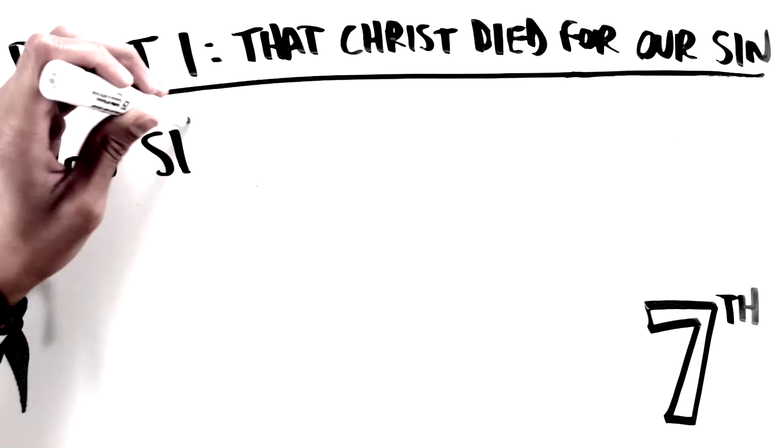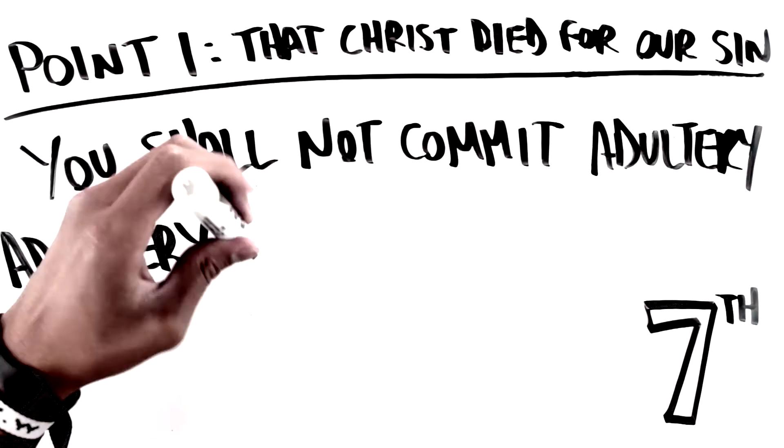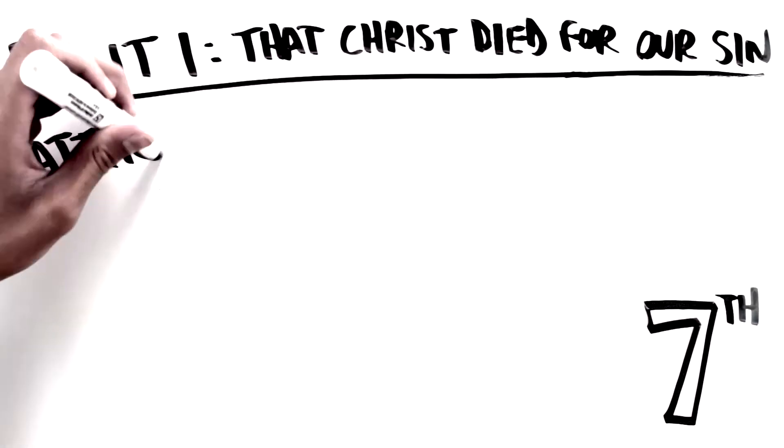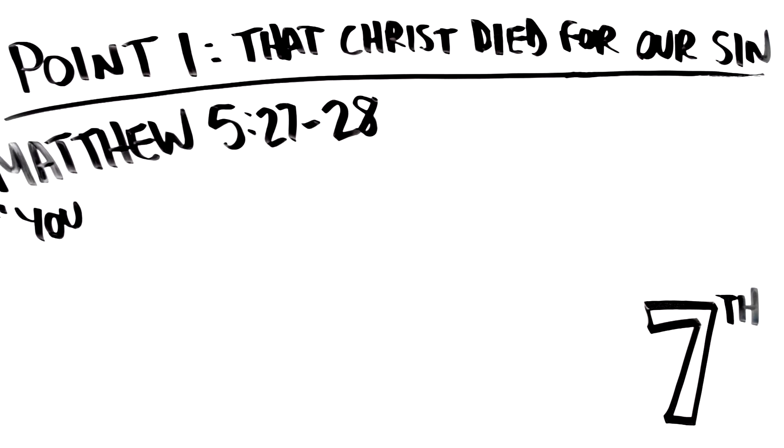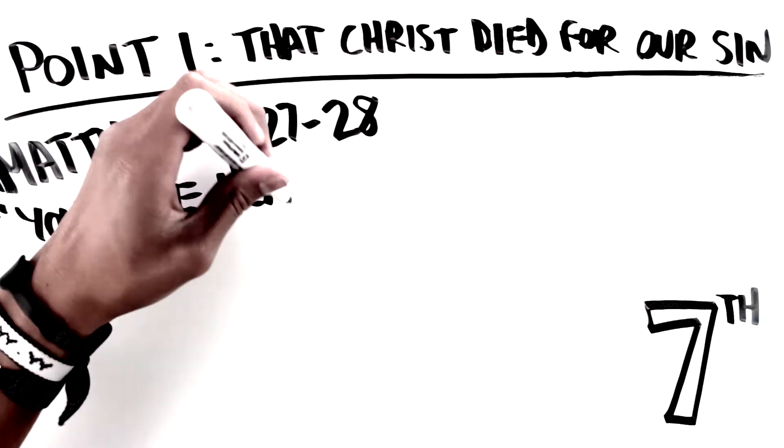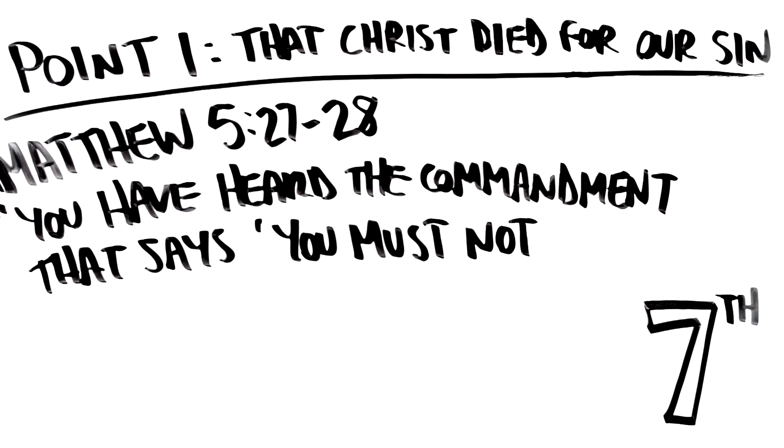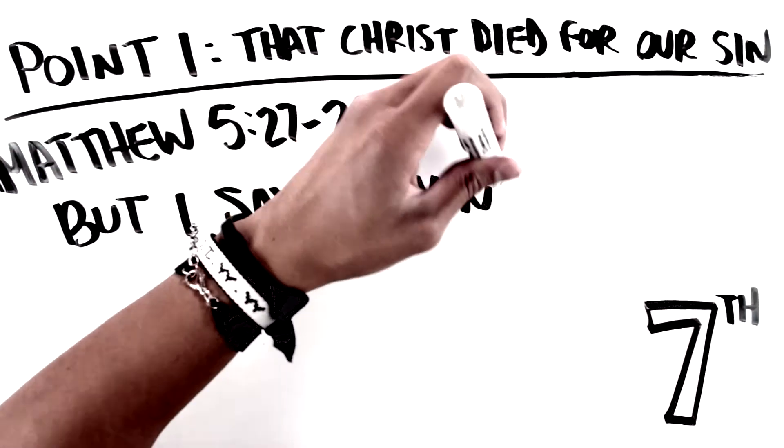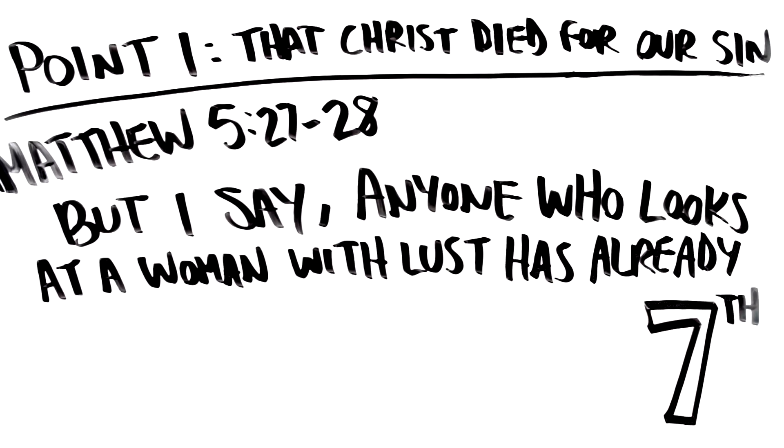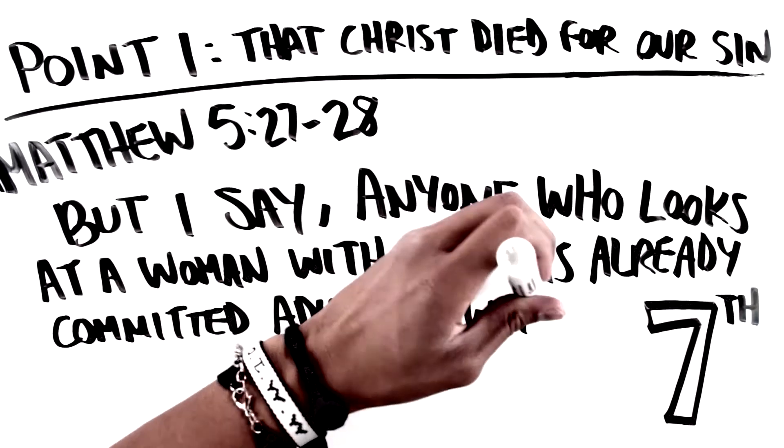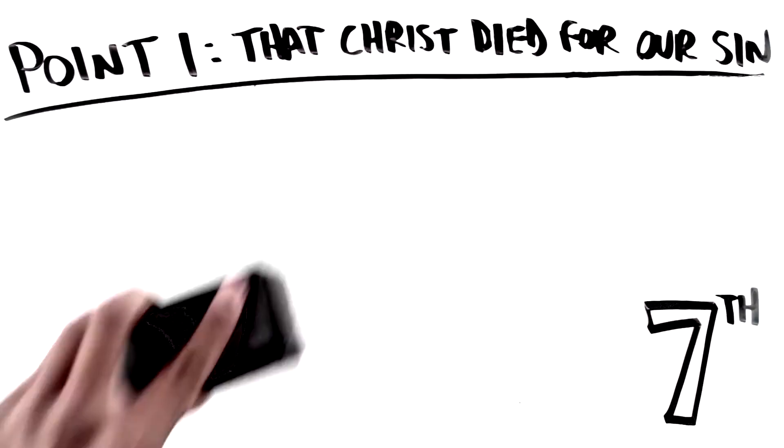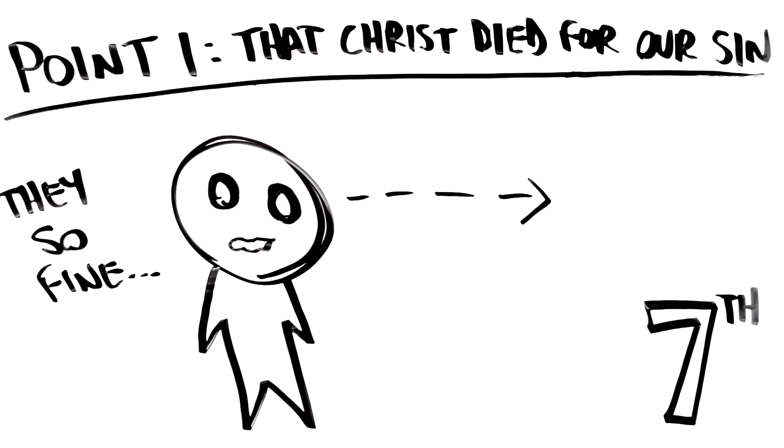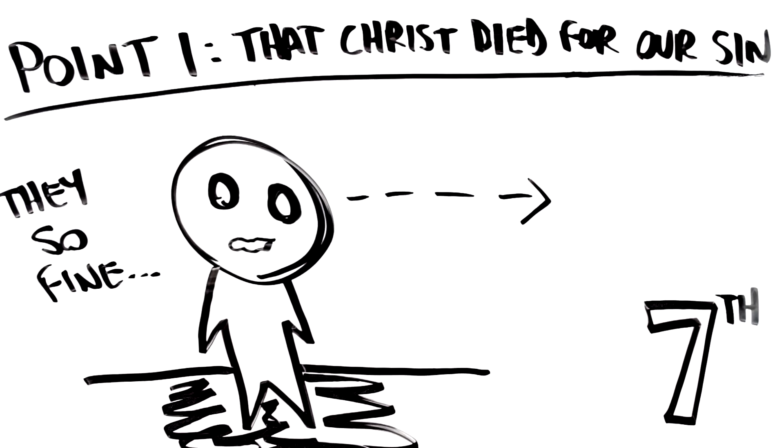7th commandment, you shall not commit adultery. Adultery meaning to have sexual relations with someone else's spouse. You may say, hey, no, I've kept this one. Matthew 5:27 to 28 reads, you have heard the commandment that says, you must not commit adultery. But I say, anyone who even looks at a woman with lust has already committed adultery with her in his heart. So if you ever sexually lusted at someone else, you've broken this commandment, and in God's eyes, it's as if you slept with another spouse.